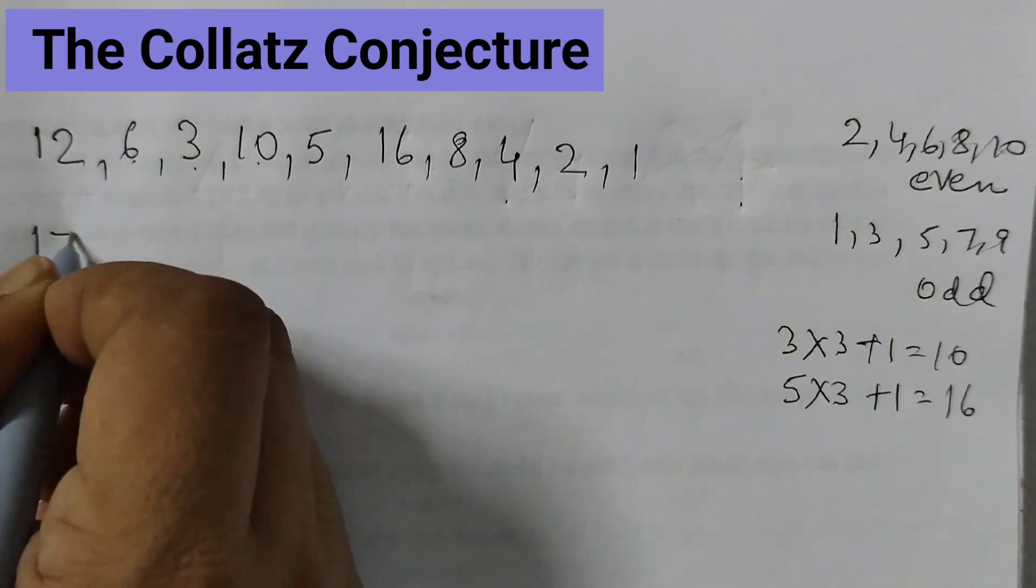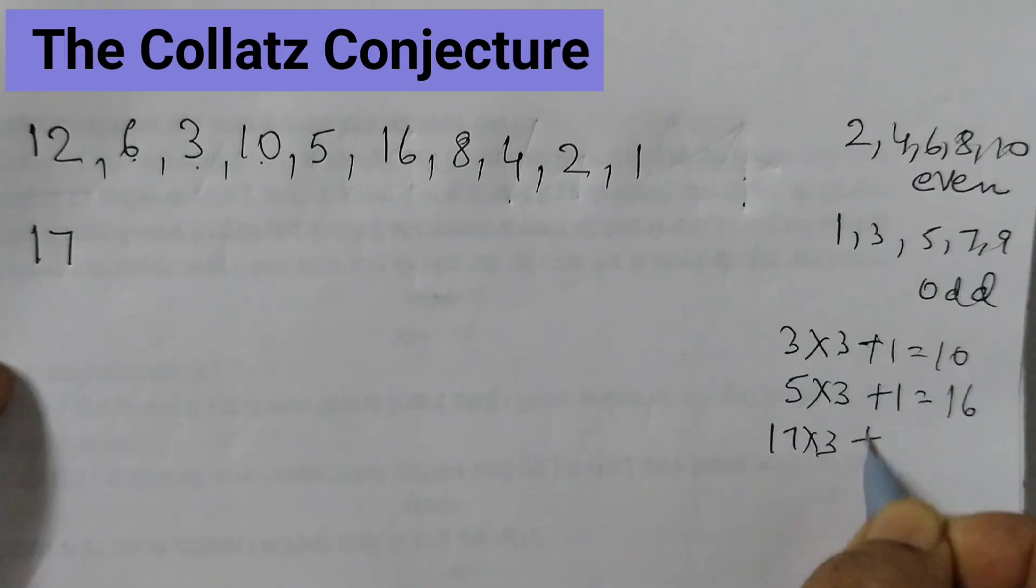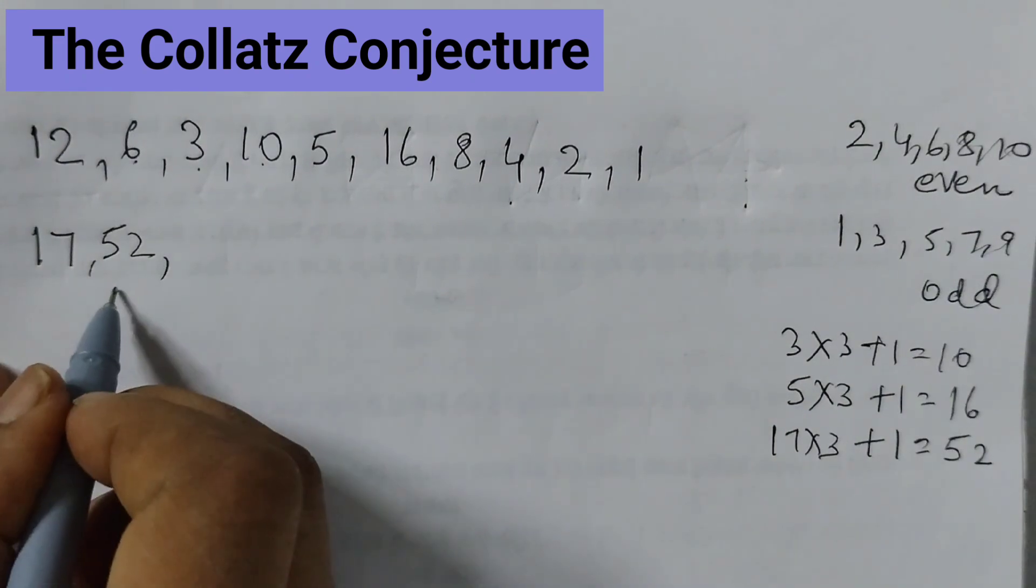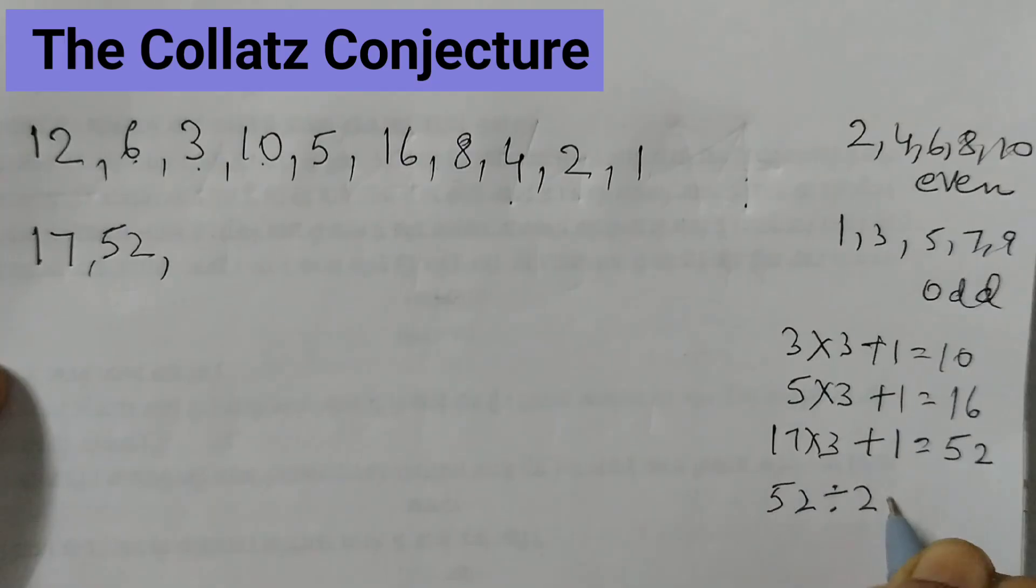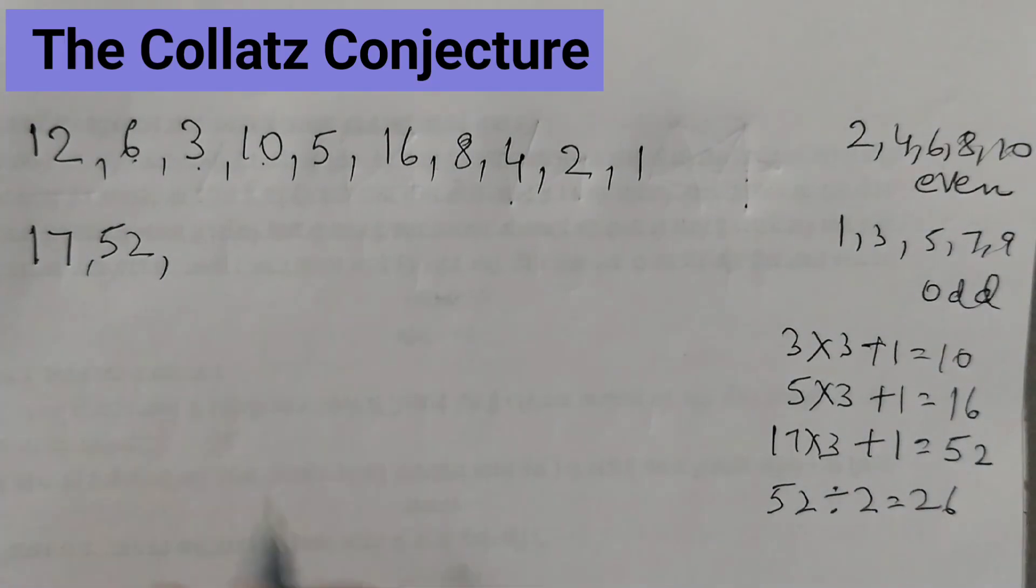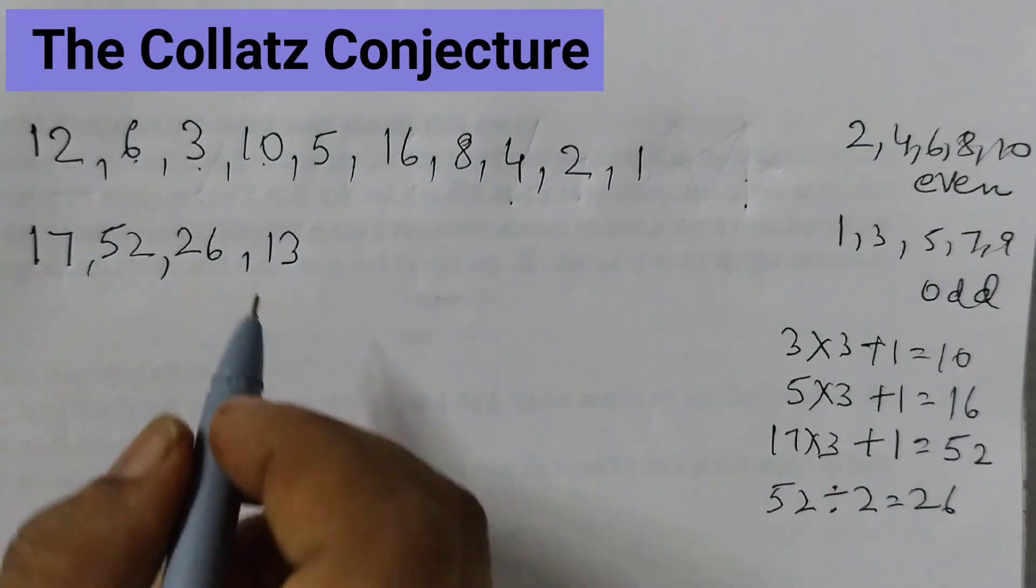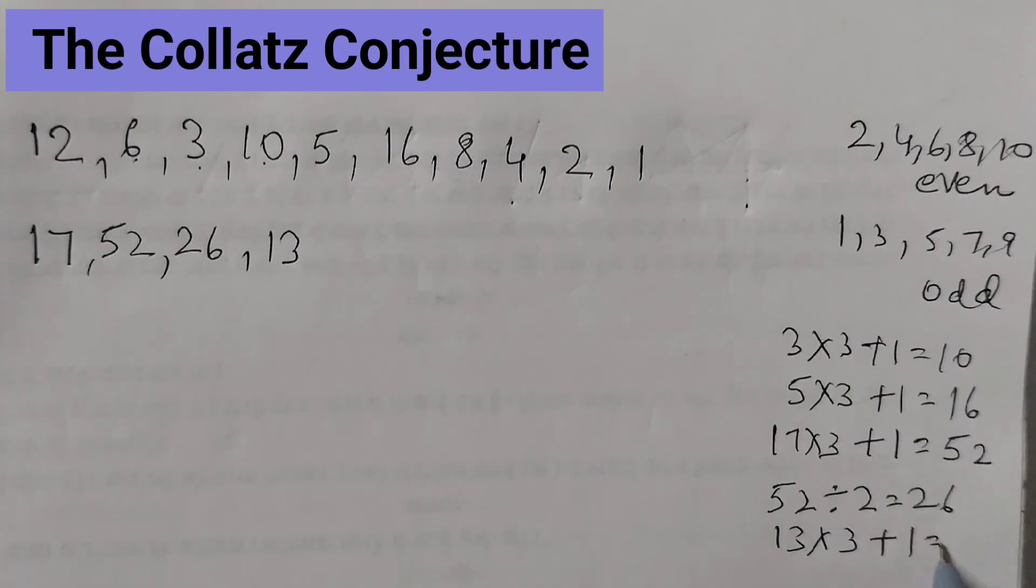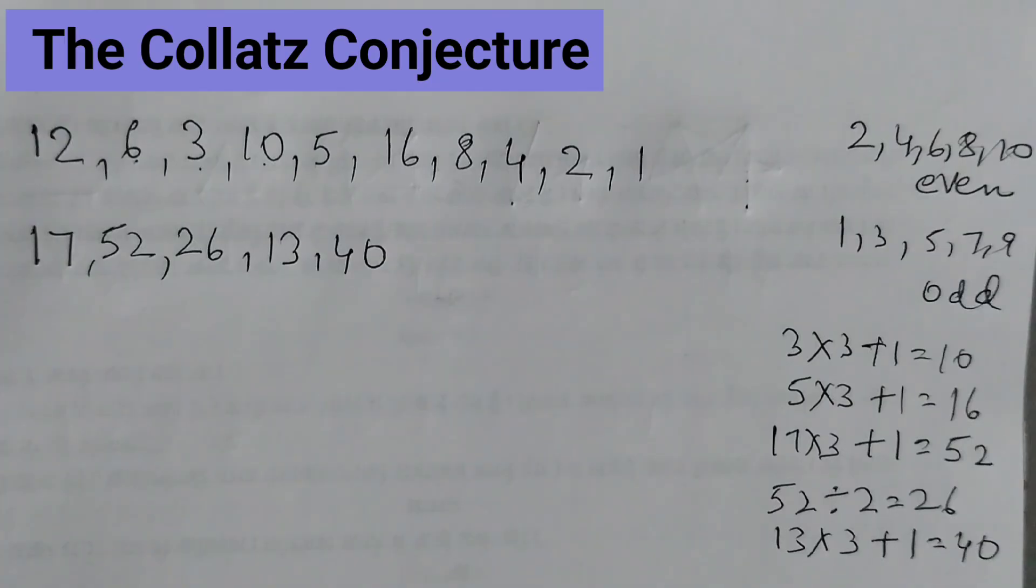Let us take the next number which is 17. 17 is an odd number, so we will multiply by 3 plus 1 and we would get 52. So 52 is an even number, half of 52, that is 52 divided by 2 is 26. 26 is an even number, half of this 13. 13 is an odd number, so multiply by 3 plus 1. 39 plus 1, 40.